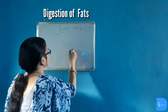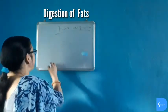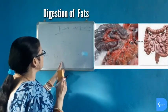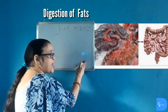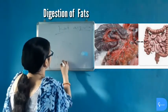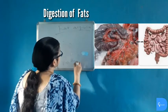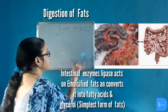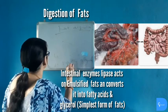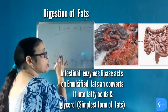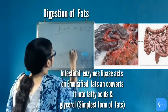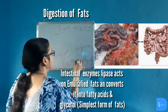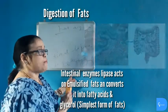In the ileum, intestinal juices and intestinal lipase act on the emulsified fat and convert it into fatty acids and glycerol, which are the simplest forms of fat. Fatty acids and glycerol are then absorbed by the ileum.